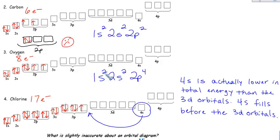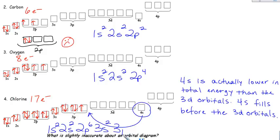Chlorine would shorten up to: 1s2, 2s2, 2p6, 3s2, and then the 3p has 5. Those superscripts should all add up to 17 — the total number of electrons in that atom.